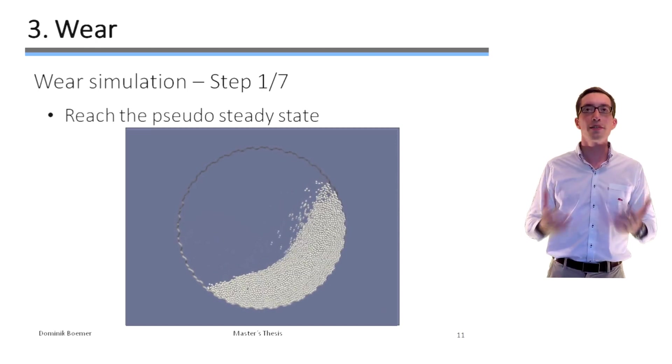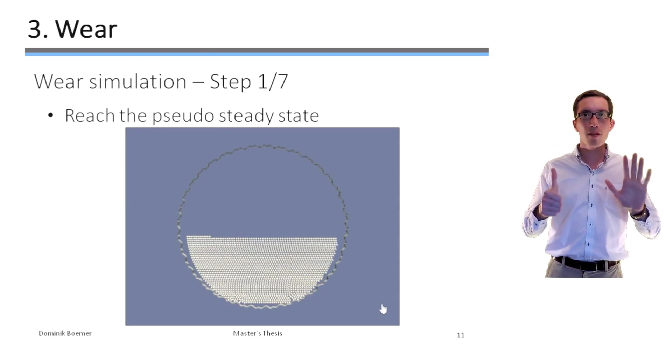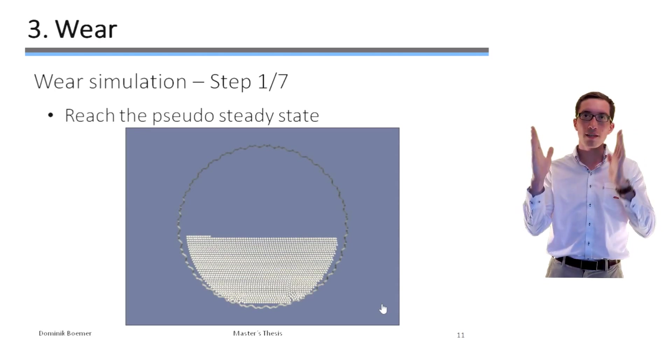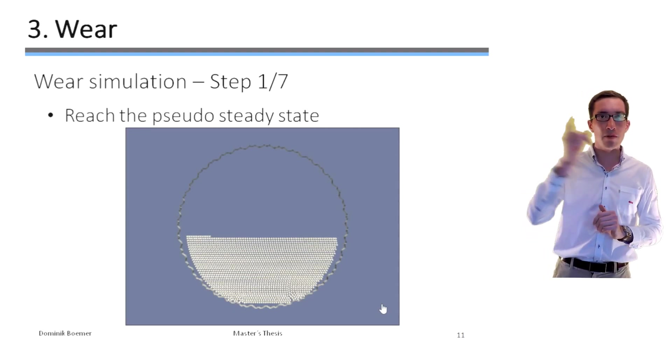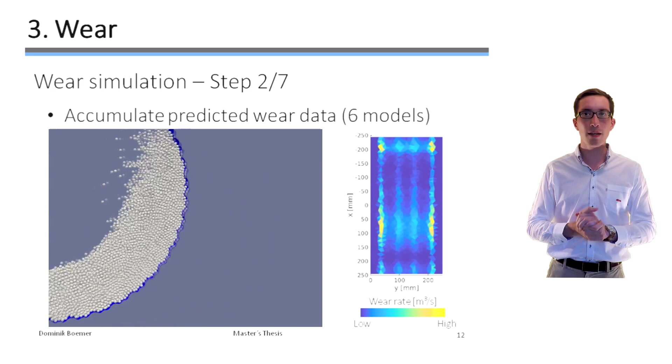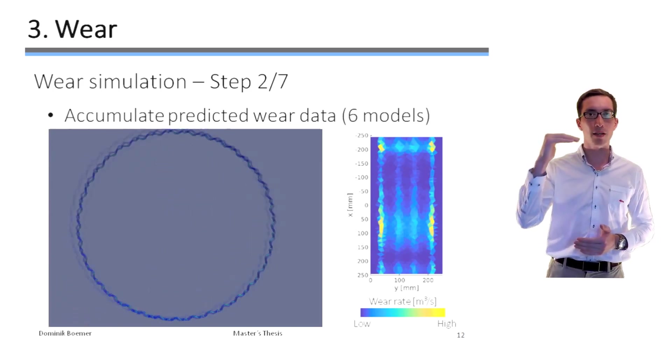Once we have reached this steady state, the wear data for six different wear models like the tangential damping energy is accumulated for each facet. Moreover, we take advantage of the azimuthal periodicity by mapping all the data on one master plate which increases the statistical representativity of the data.